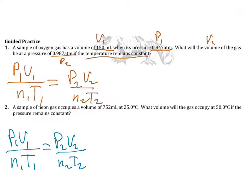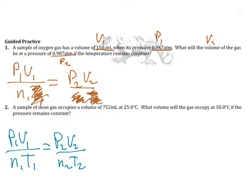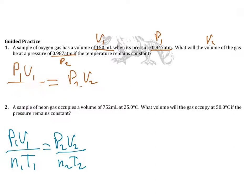The temperature of the gas remains constant, so we can cross that out. It also doesn't mention moles at all, so we assume moles are constant and cross those out too. If a variable isn't given or is stated as constant, you can cross it out. What we end up with is P1V1 equals P2V2.